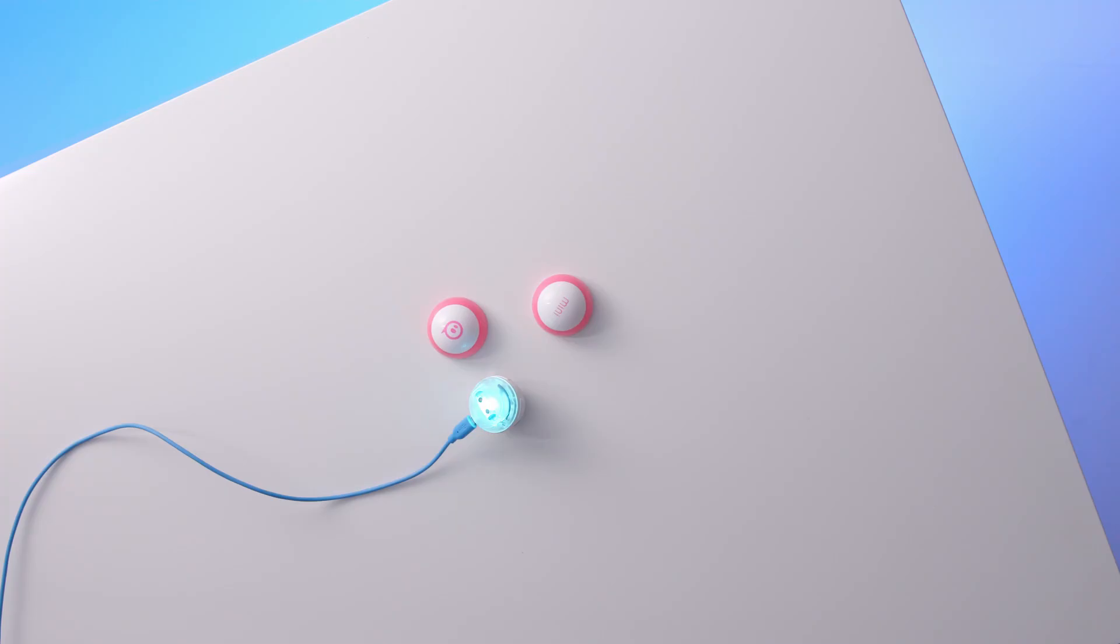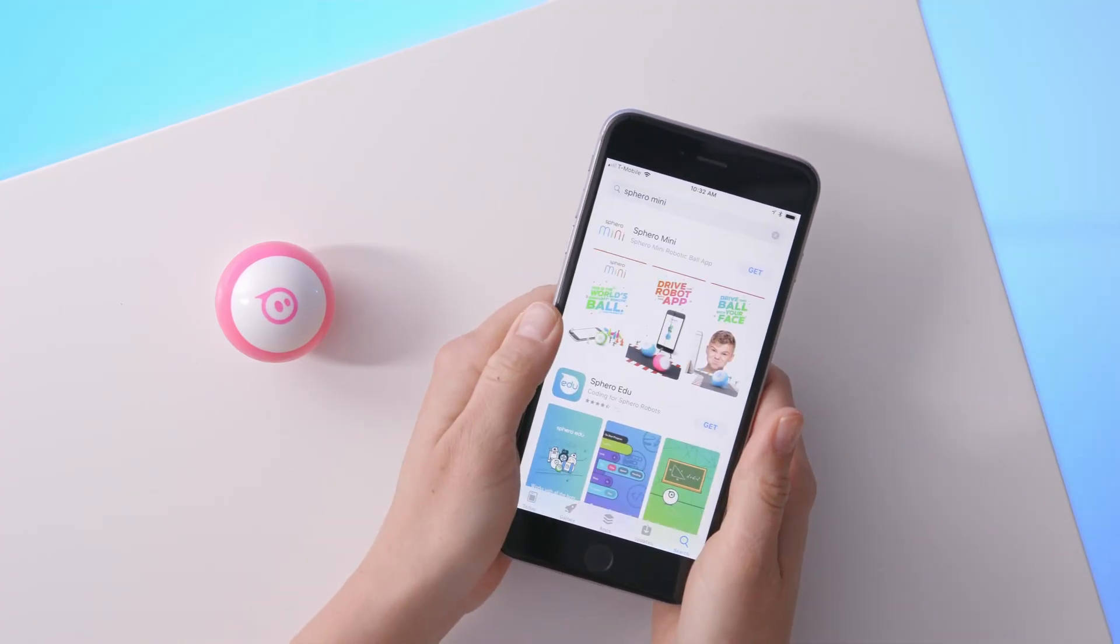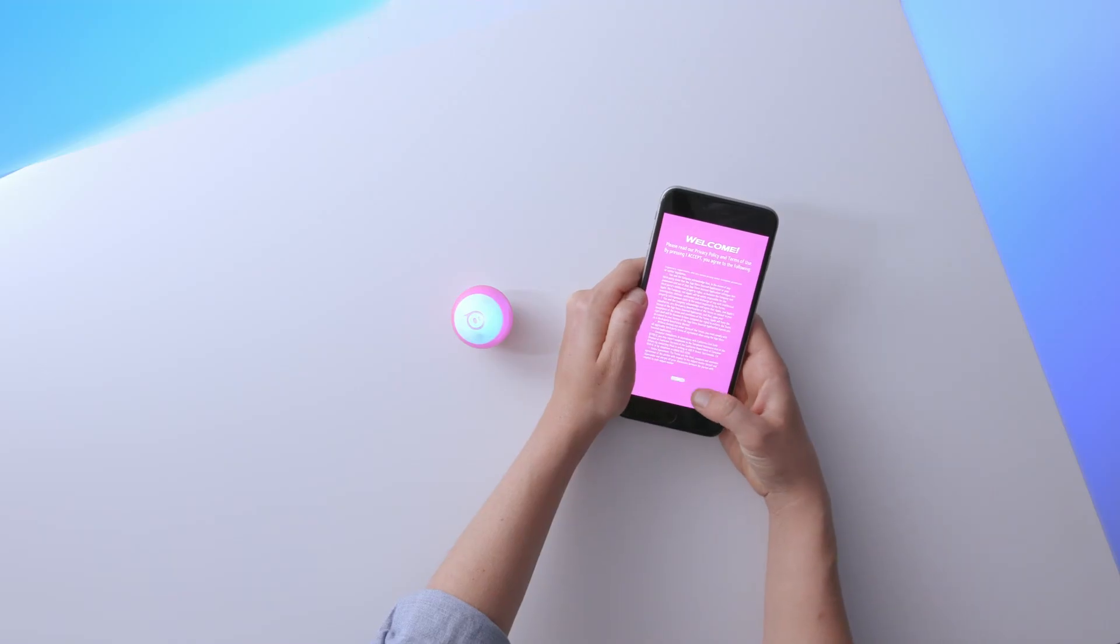While mini is charging, get out your smart device and download the Sphero mini app from the App Store or Google Play. Launch the app. First-time users will go through a quick welcome screen.